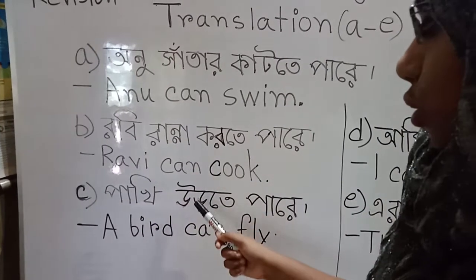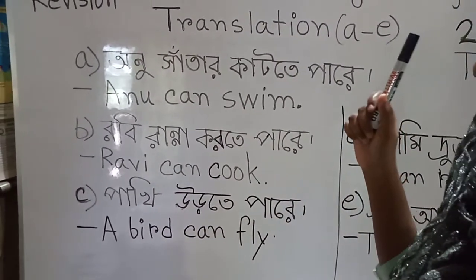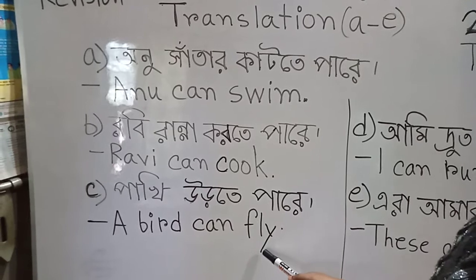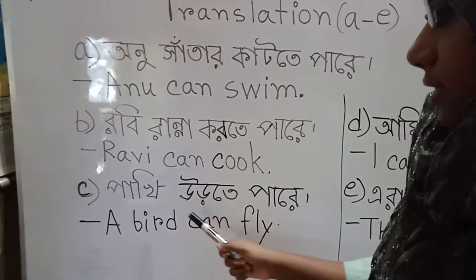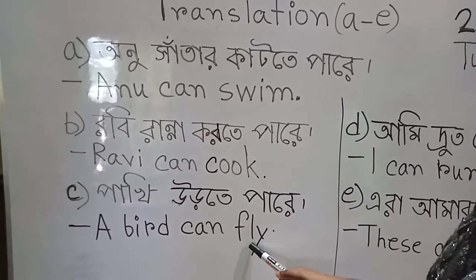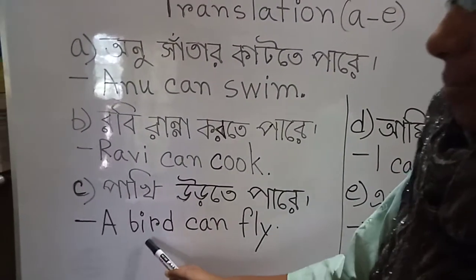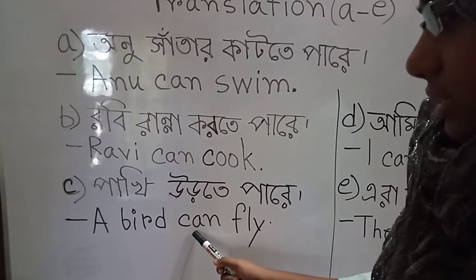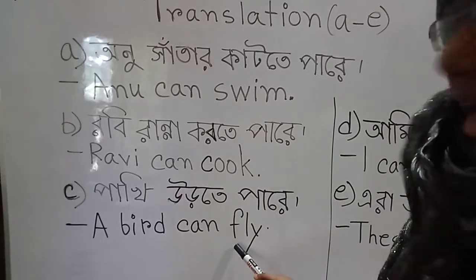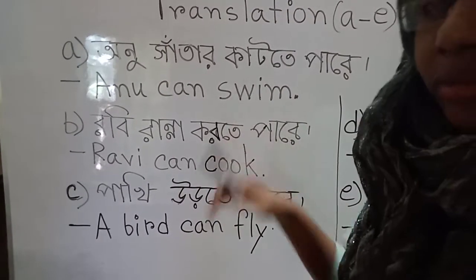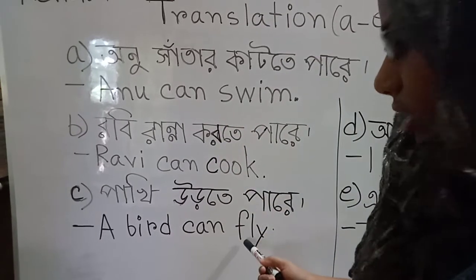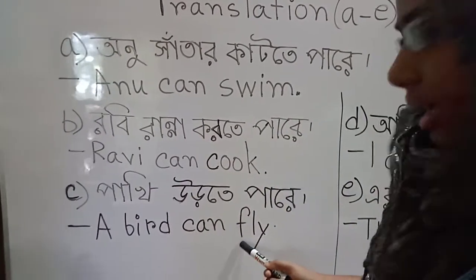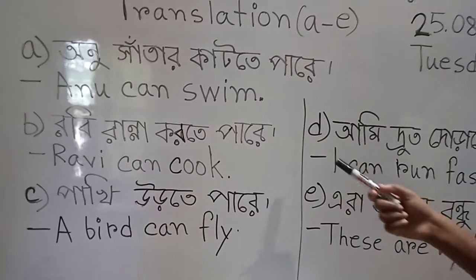Pakhi urte pare. The English sentence is: A bird can fly. Let's spell the words: A, B-I-R-D — bird means pakhi. C-A-N — can, means 'pare'. F-L-Y — fly, means 'urte para'. So, a bird can fly.